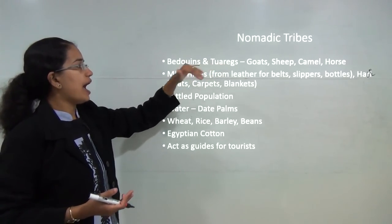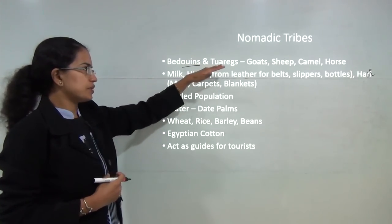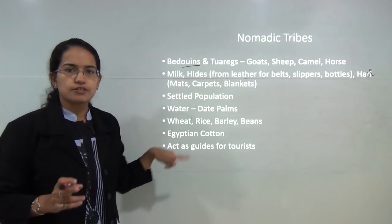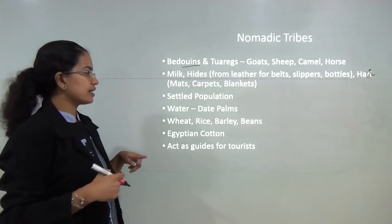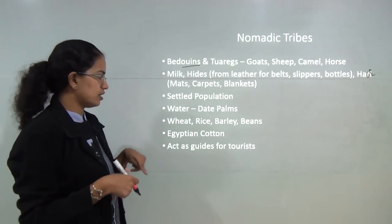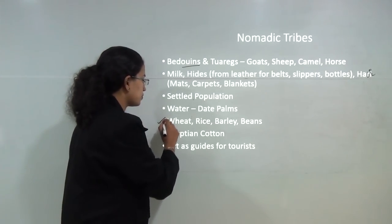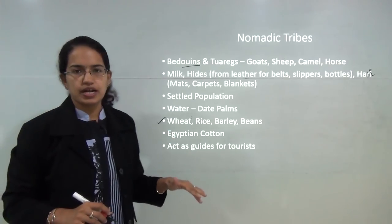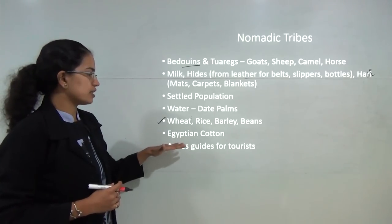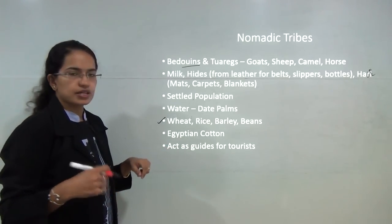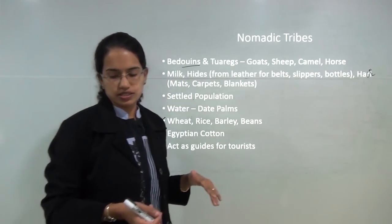They now act as guides for foreign tourists. They previously used to live only in and around the oasis area, where date palms and water are available. They now also grow vegetation, mainly wheat, rice, barley and beans. The nomadic tribes are also known for their production of cotton, and Egyptian cotton is one of the finest cottons in the world.